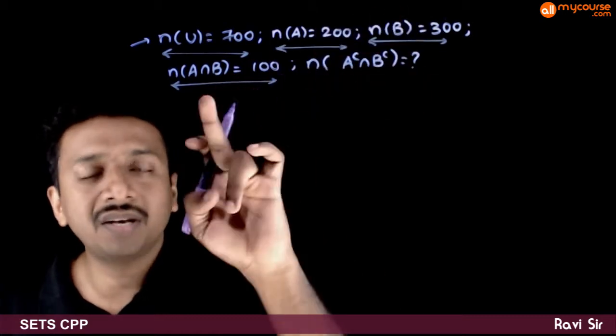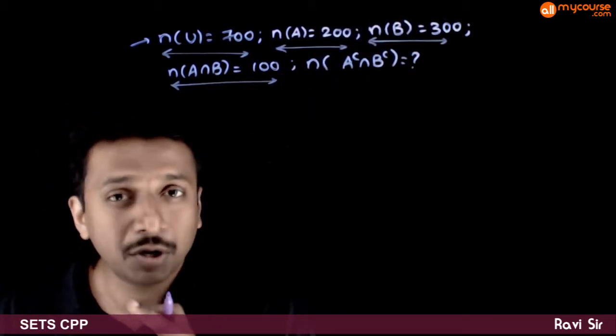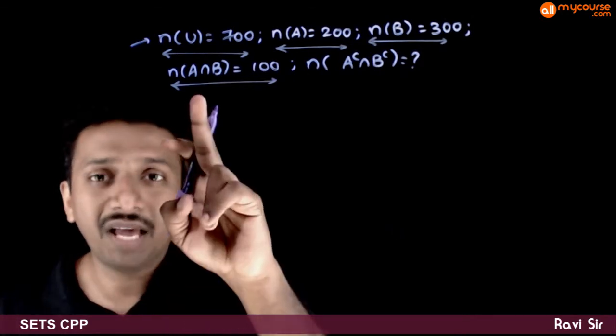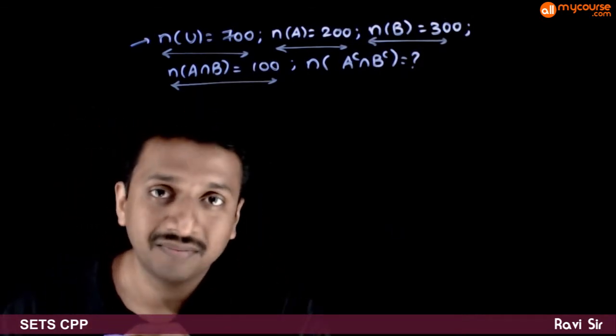A is given, B is given, intersection is given. According to the formula you can find union, A union B. N of A union B can be very easily found out.